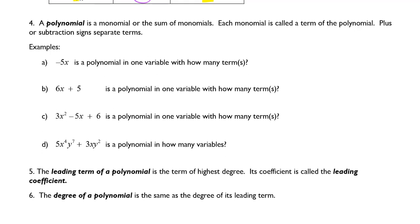A polynomial is a more broad term, and it's a monomial or the sum of a whole bunch of monomials, meaning a polynomial has one or more terms in it. That's the basic idea. Each monomial is called a term of the polynomial. Plus or subtraction signs separate the terms. For example, if you had negative 5x, this is a polynomial in one variable with how many terms? 1.